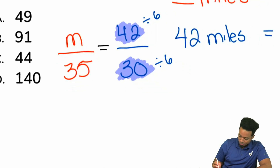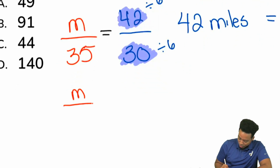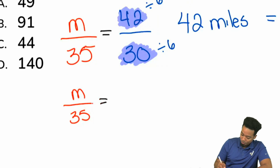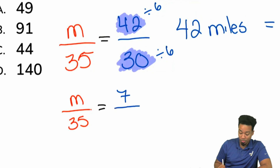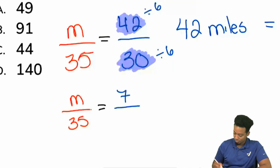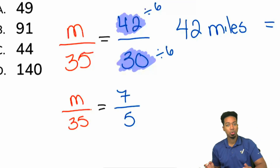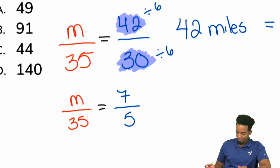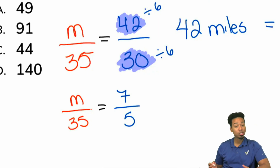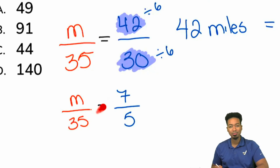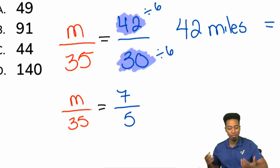We still have M over 35 on the left side, but on the right side now we have something beautiful: 42 divided by 6 is 7, and 30 divided by 6 is 5. So now we have M over 35 equals 7 over 5. 35 times 7 isn't that terrible, and then dividing by 5 really won't be that bad.